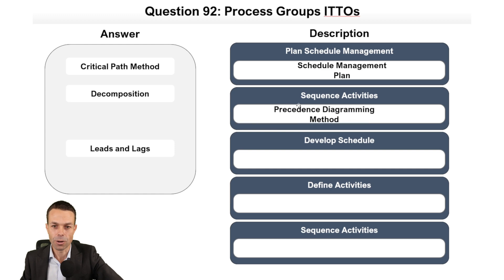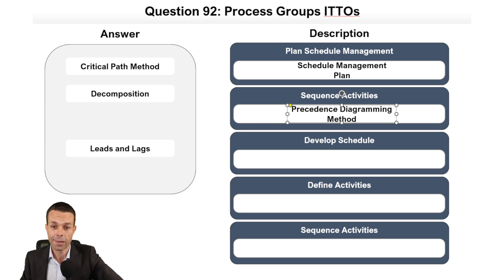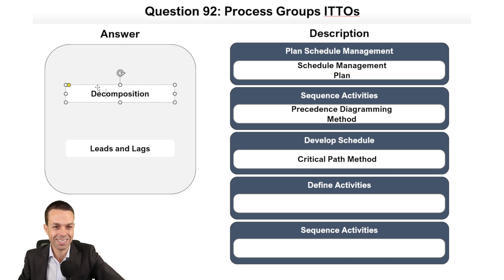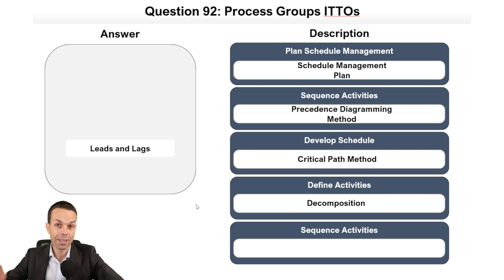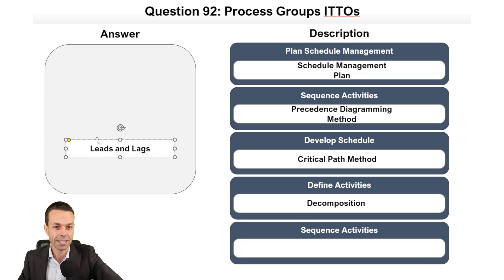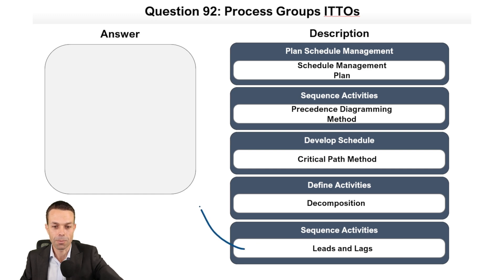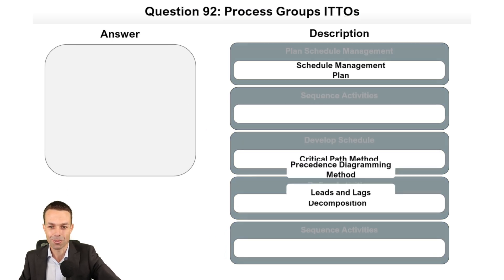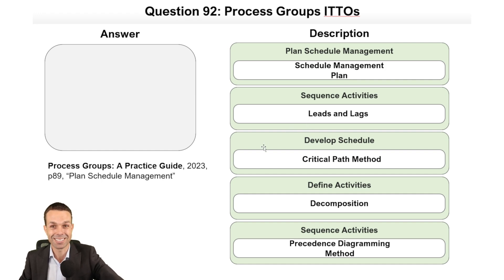For sequencing activities, we use the precedence diagramming method to define what comes first and what comes next. Developing the schedule uses the critical path method. Defining activities uses decomposition — taking our scope and breaking it into individual activities. Notably, both leads and lags and the precedence diagramming method are used for sequence activities. That's verified on page 89 under plan schedule management.